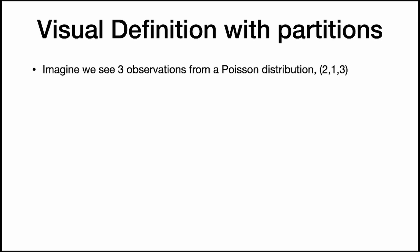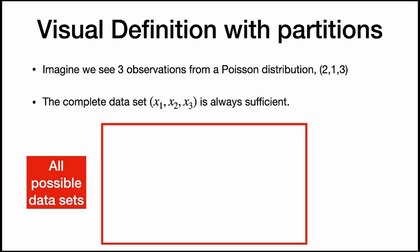Let's try to understand this visually. Imagine that we observe three observations from a Poisson distribution: two events occur, one event occurs, and three events occur. The complete data set is always sufficient, so we observe (2, 1, 3).